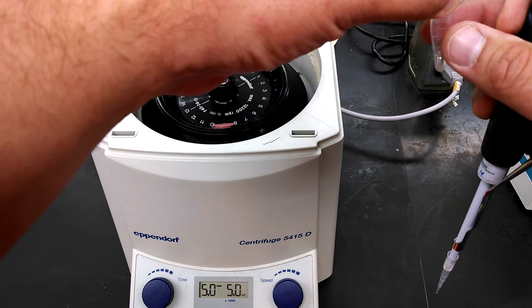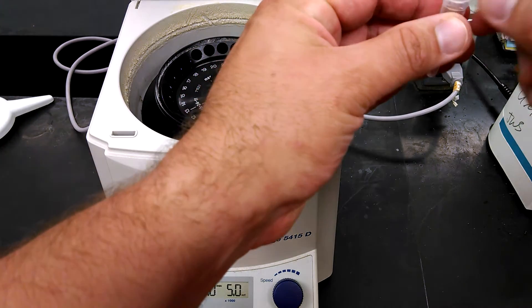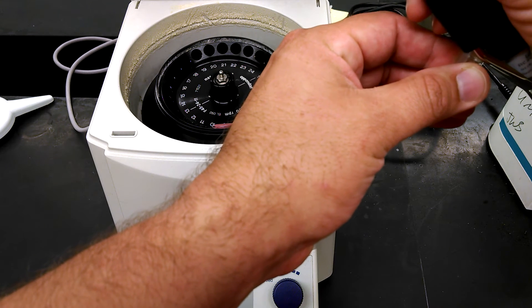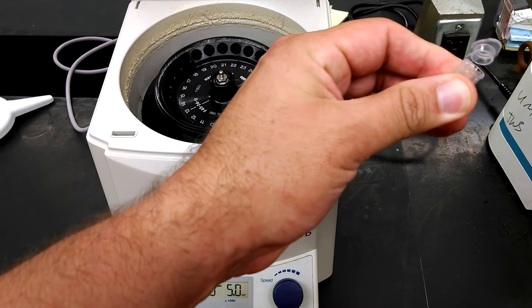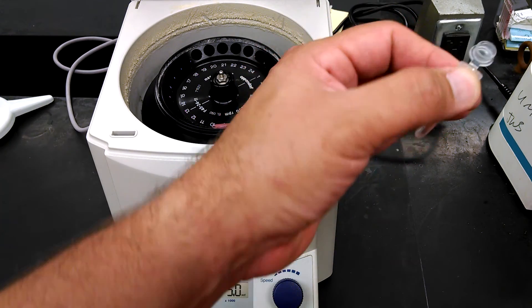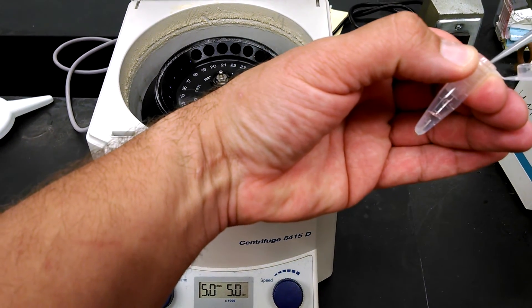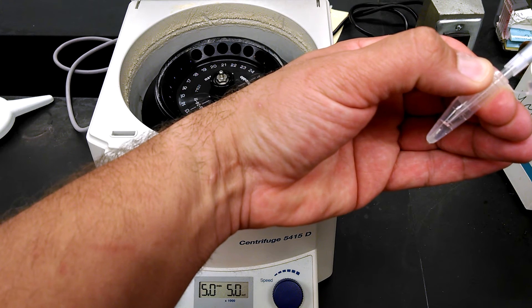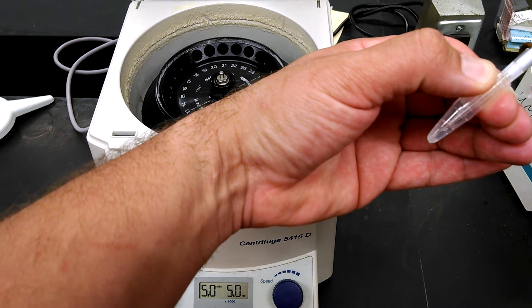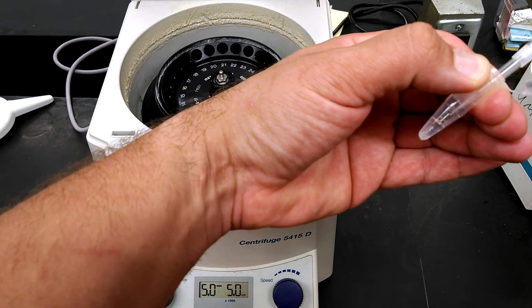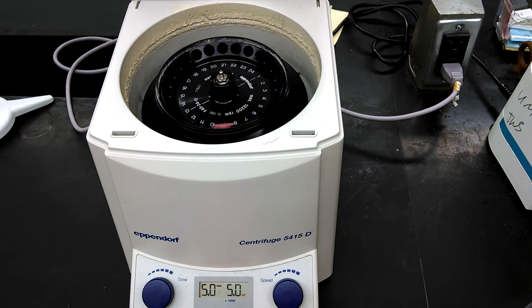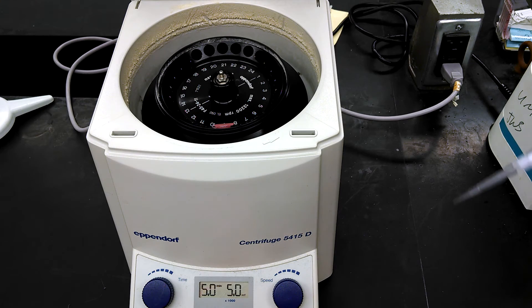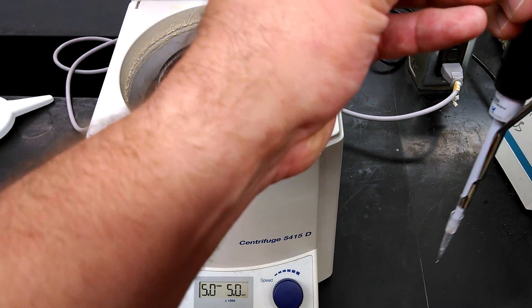And we don't want any of those beads, so we're going to move this very gently, gently pop the top. And when we pull out our sample, we're only going to put the tip in the very top of the sample, because we don't want one of those beads. And if you do that, your PCR works beautifully. If you get one of those beads, you get to do your PCR again.